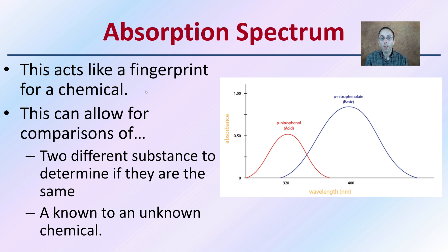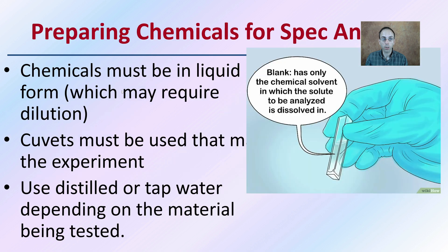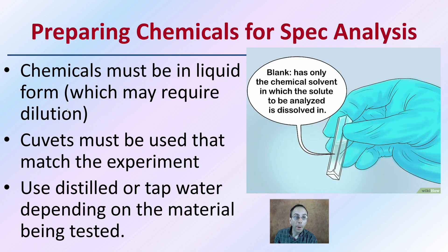Based on the absorbance spectrum generated, we can determine the similarity of two substances — particularly if both are unknown — and whether or not they're a match for each other. When preparing chemicals for spectral analysis, chemicals must be in liquid form, which may require dilution.